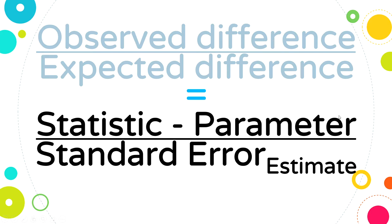So every one of these tests we're talking about will have some kind of observed difference in the numerator and some kind of expected difference that is by chance, what could I expect, in the denominator.